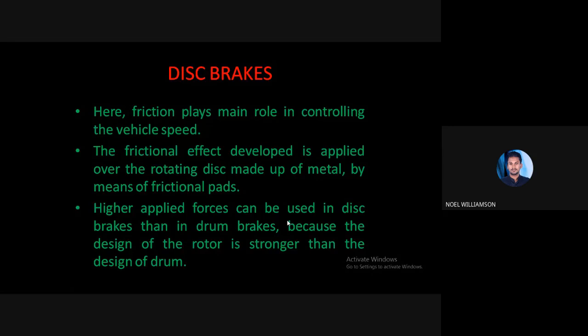The disc brakes — by the name itself we can see it is a braking system using certain kinds of discs. Friction plays a main role in controlling the vehicle's speed. In any braking system, the main controlling factor is friction. By utilizing friction, the vehicle's speed is controlled or the vehicle is made to stop. The friction effect is applied over the rotating disc made of metal by means of frictional pads.